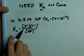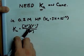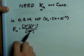And you see already, this Ka is a ratio between the amount that's dissociated and the amount that's not dissociated.